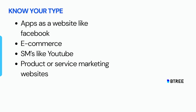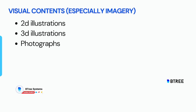You have to decide your website type because each type has its own principles. And finally, there's the marketing website type: one product, one service, one sale — one particular product, one website. Next, one important principle is visual content, especially imagery. That's why we use image content, for example in the hero section.